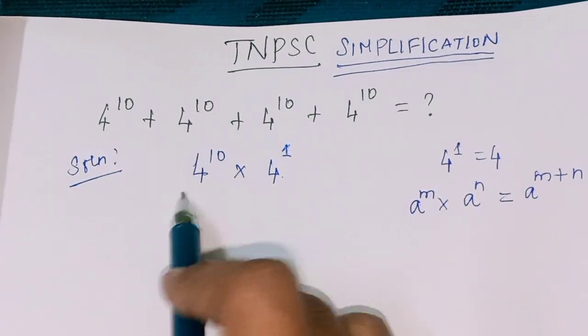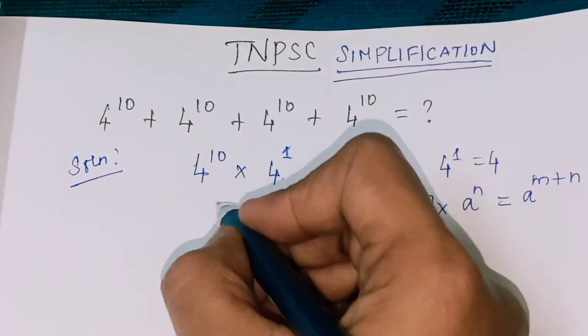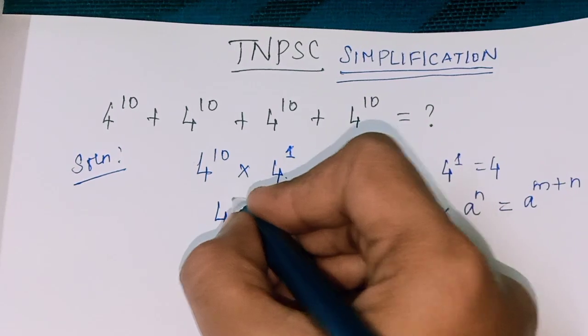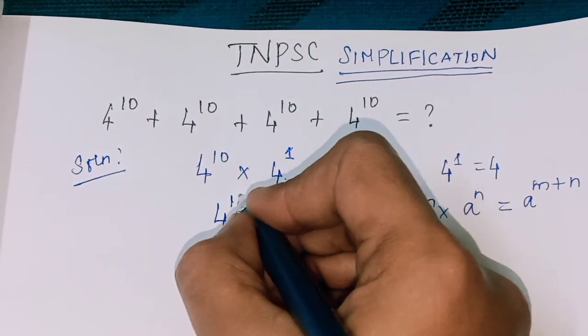So, since the base is common, we get 4 power 10 plus 1, which equals 4 power 11.